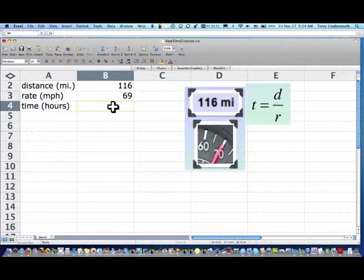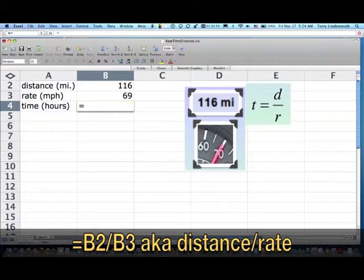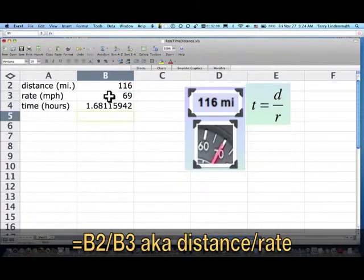So using my formula in the next cell, I'm going to put in equals, I'm going to click on the cell that contains the distance 116 divided by, I'm going to click on the cell that contains the rate of speed, 69, and press return.